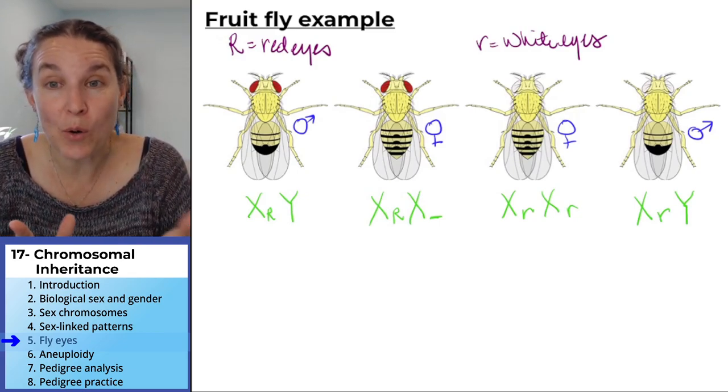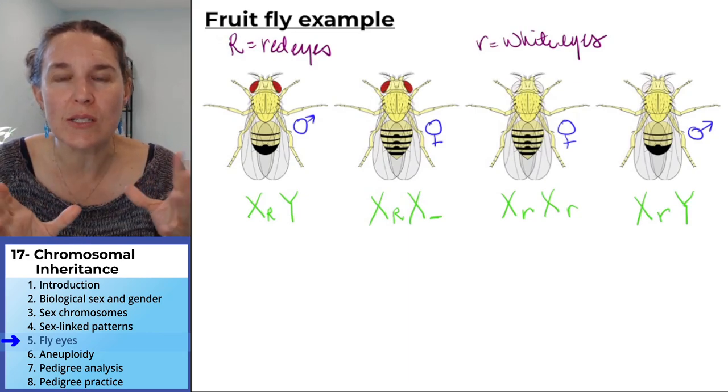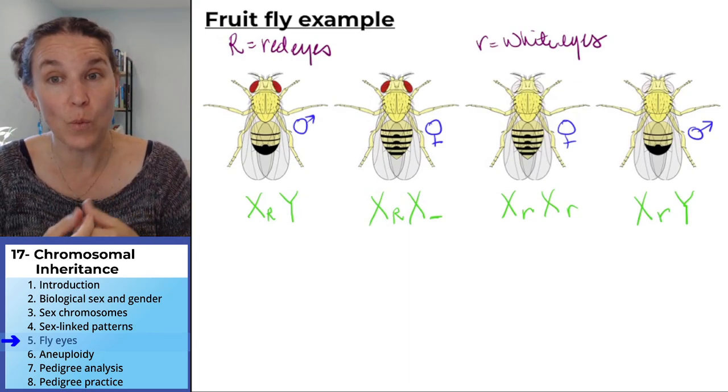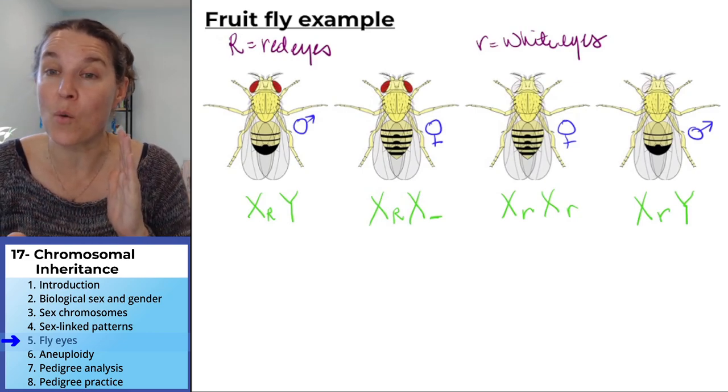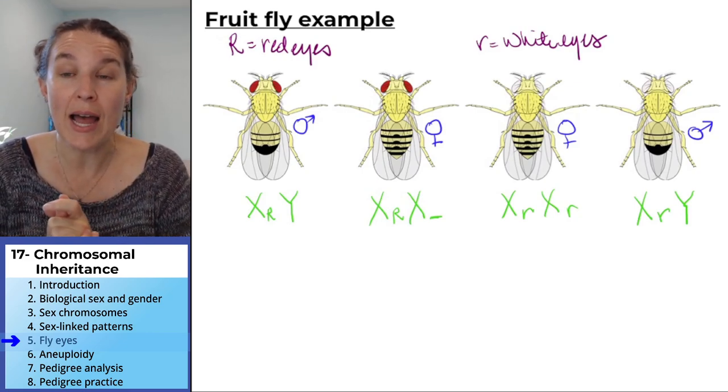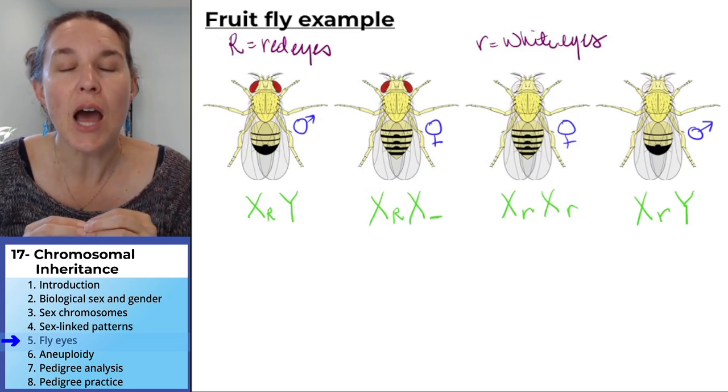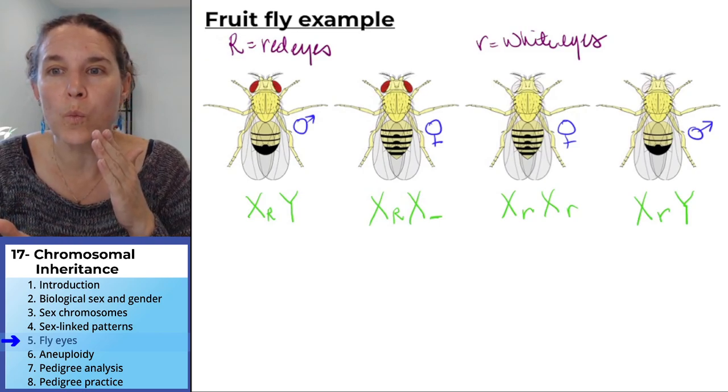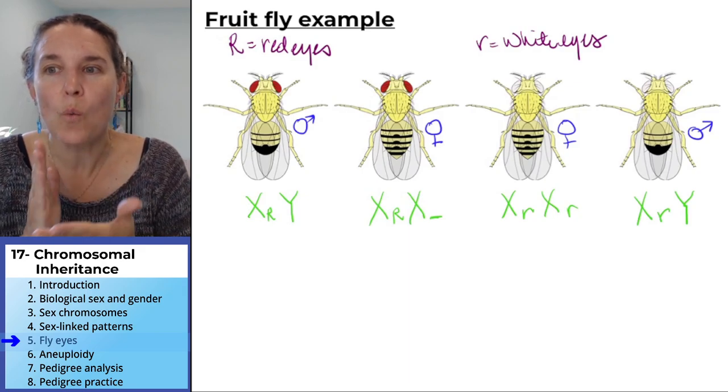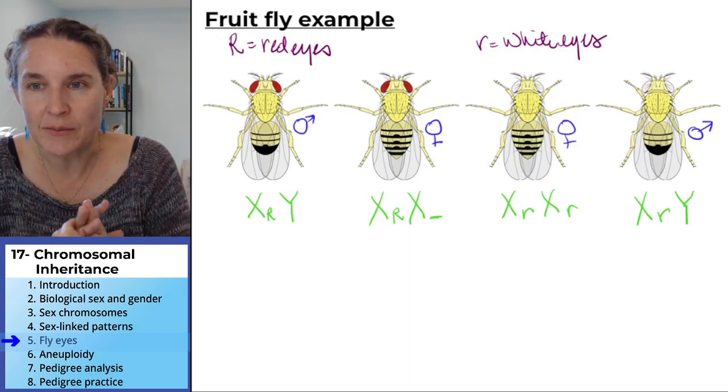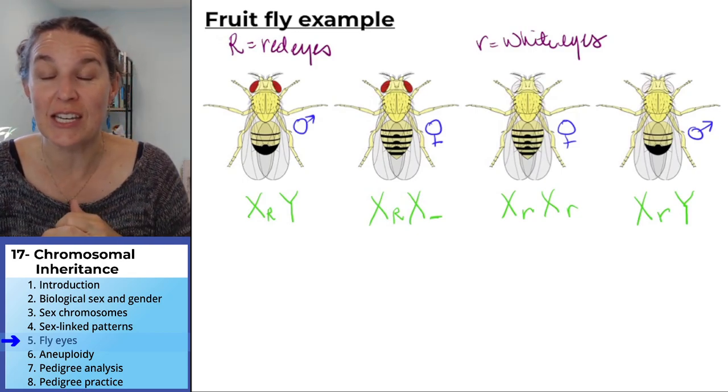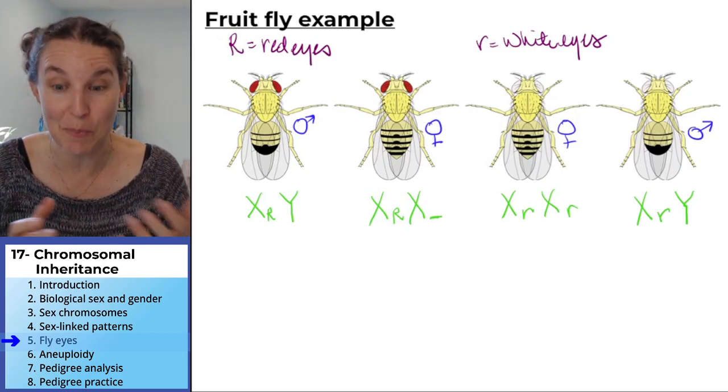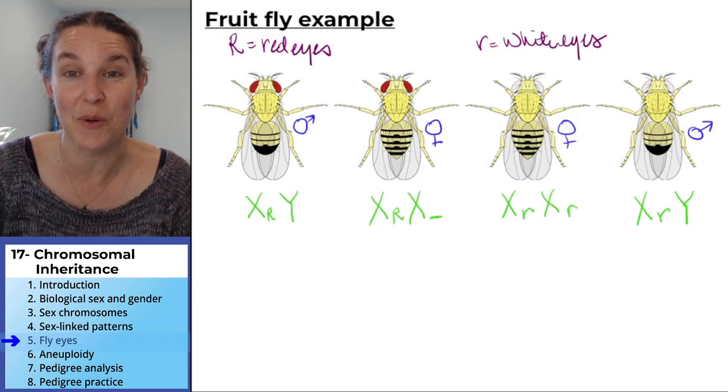This is another example. We could do all sorts of fly crosses. We could cross a white-eyed female with a red-eyed male. I could cross a red-eyed female with a white-eyed male, and then you tell me whether or not she is heterozygous or homozygous based on the offspring that we produce.